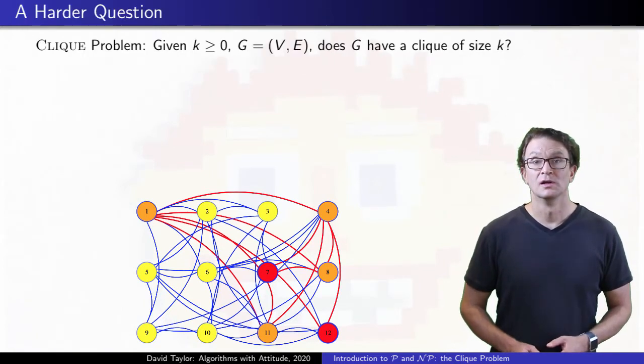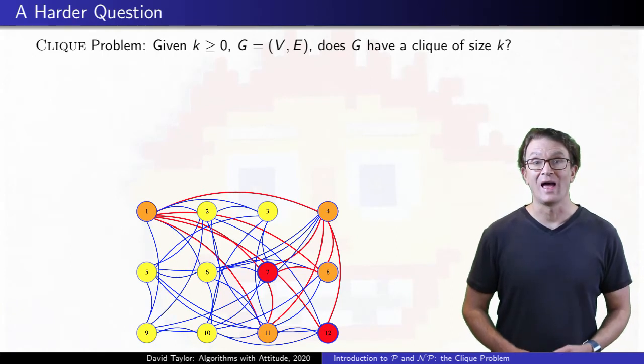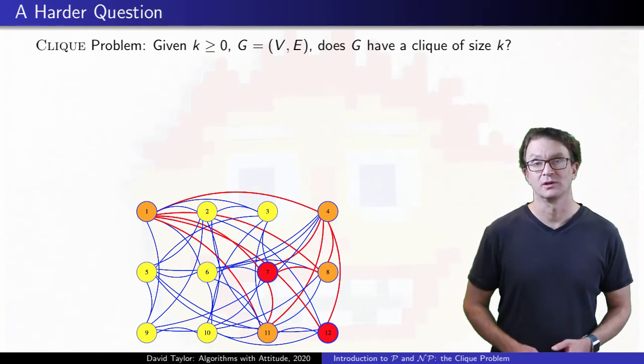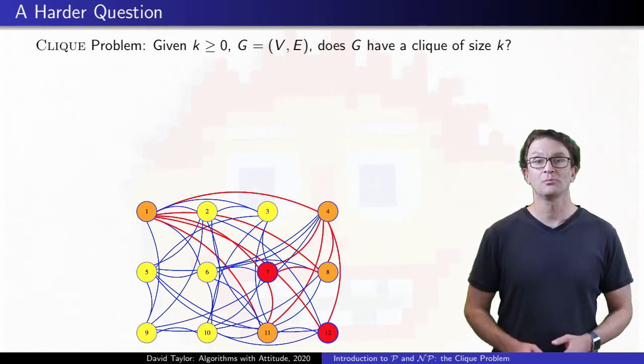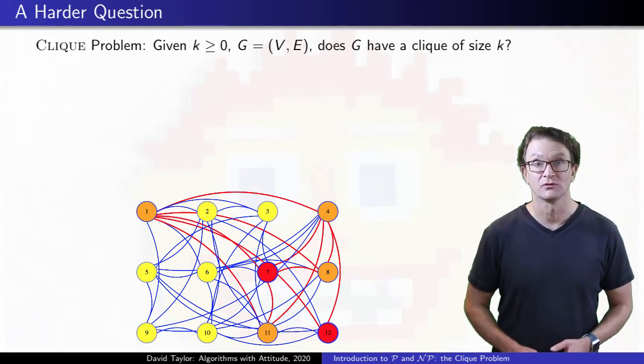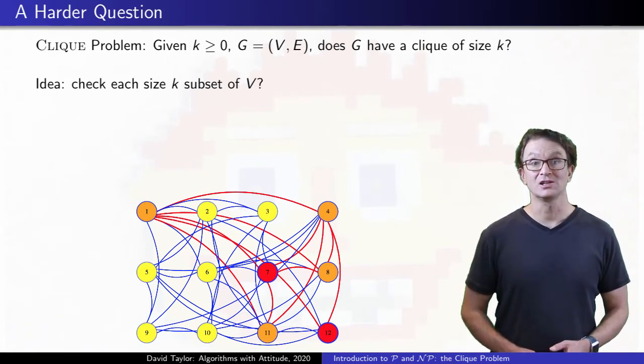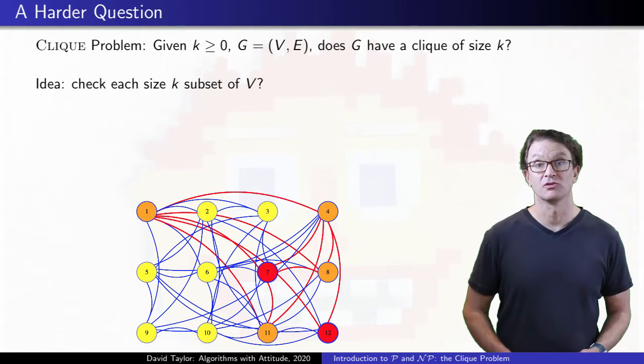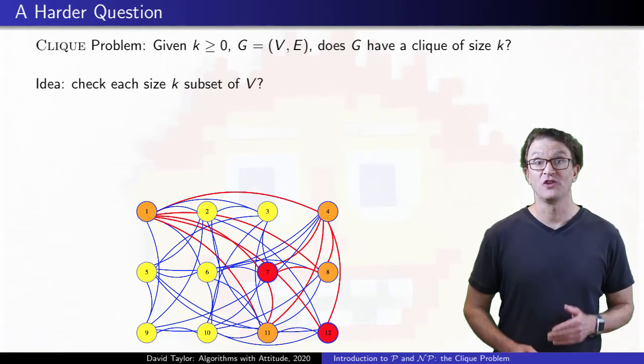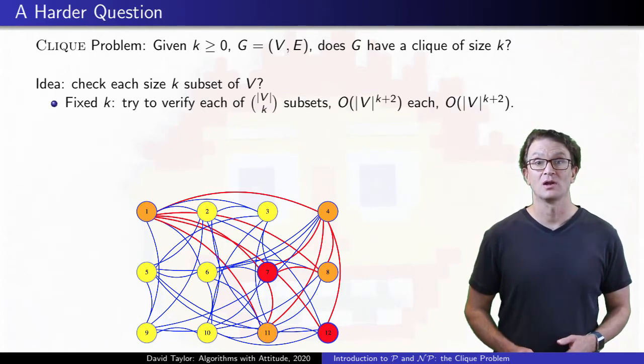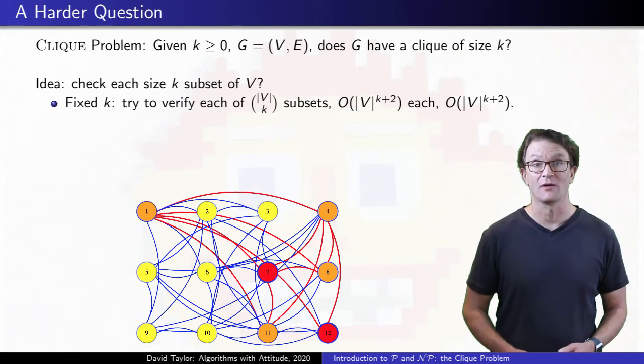The problem gets harder if we are just given a graph and asked if it has a clique of a given size, without being told what the clique is. We could just check each possible subset of the right size. If we fix the size, and ask how the run time of that changes as the graph grows, it is polynomial, though for large sizes, not very practical.